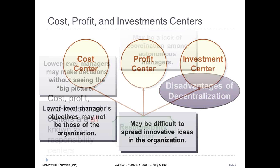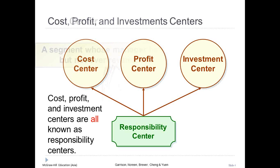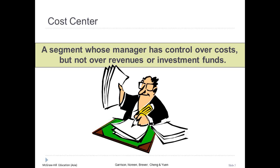Responsibility accounting systems link lower-level managers' decision-making authority with accountability for the outcomes of those decisions. The term responsibility center is used for any part of the organization whose manager has control over and is accountable for cost, volume, profit, or investments. The three primary types are cost centers, profit centers, and investment centers. The manager of a cost center has control over cost but not over revenue or investment funds. Service departments such as accounting, general administration, legal, and personnel are usually classified as cost centers, as are manufacturing facilities. Standard cost variances and flexible budget variances are often used to evaluate cost center performance.